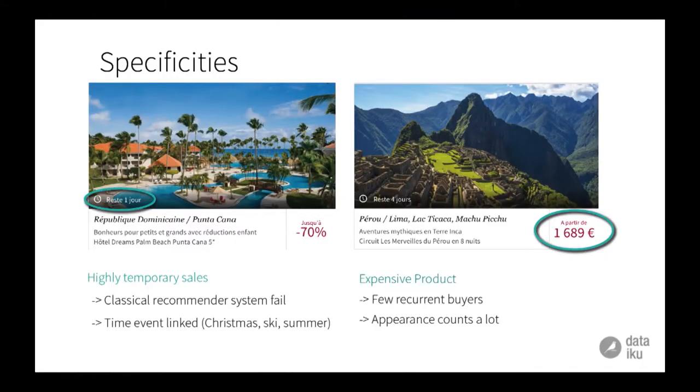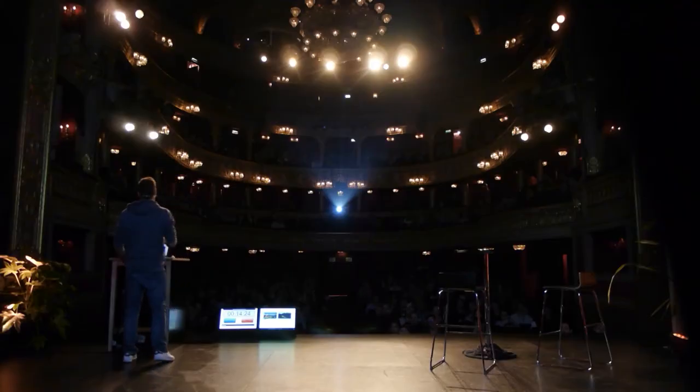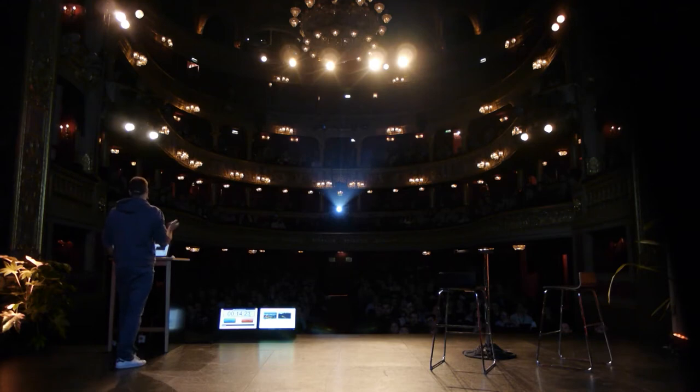The business is really temporary, which means any sale stays on the website for only one or two weeks. If you know about collaborative filtering, you may see that it's going to be a problem because the matrix is going to be super sparse. The second issue is that the product is very expensive — a trip to Machu Picchu in Peru will cost something like 1,700 euros — so obviously you don't have that many recurrent buyers. Once again, the matrix is really sparse, so you cannot rely on a typical recommendation engine.